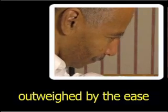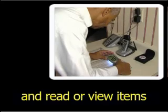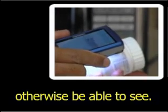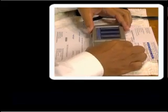However, this difficulty is outweighed by the ease with which you can take this device to any location and read or view items that you would not otherwise be able to see. Users enlarge a vitamin bottle label, a page of text, and a phone book.